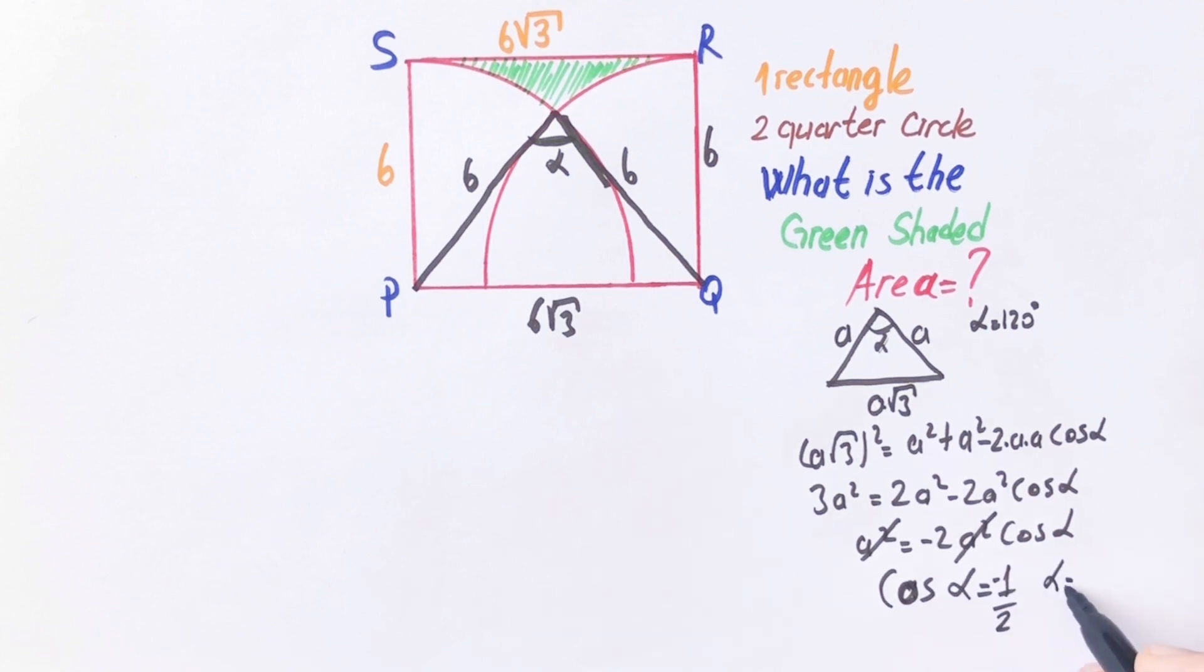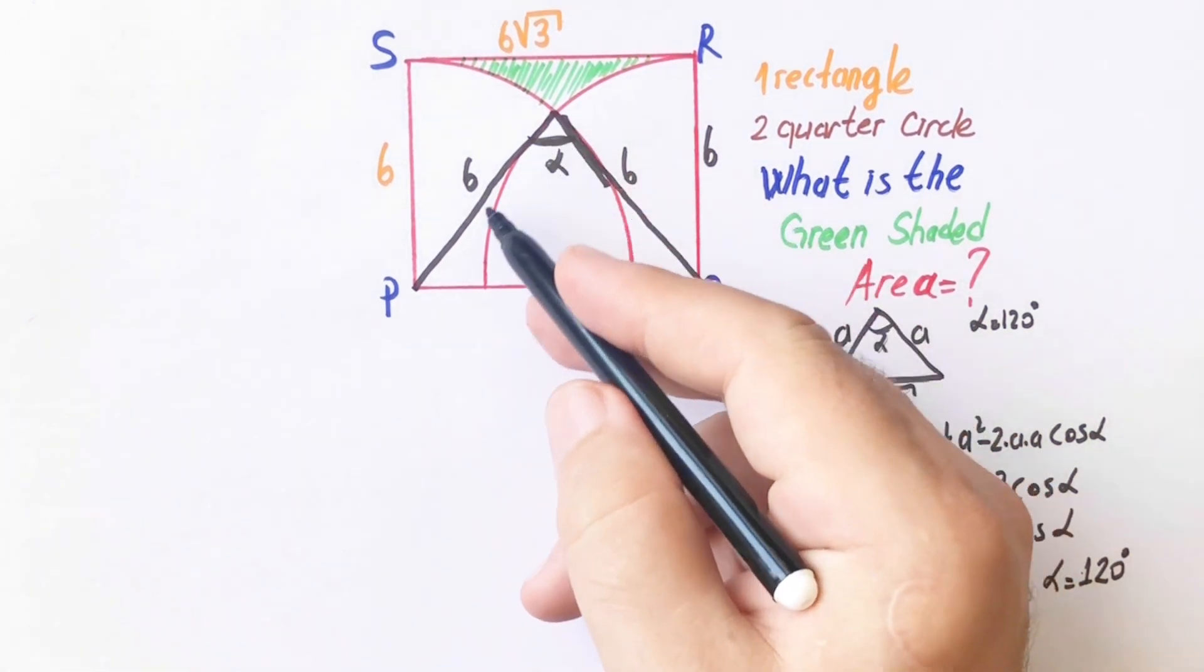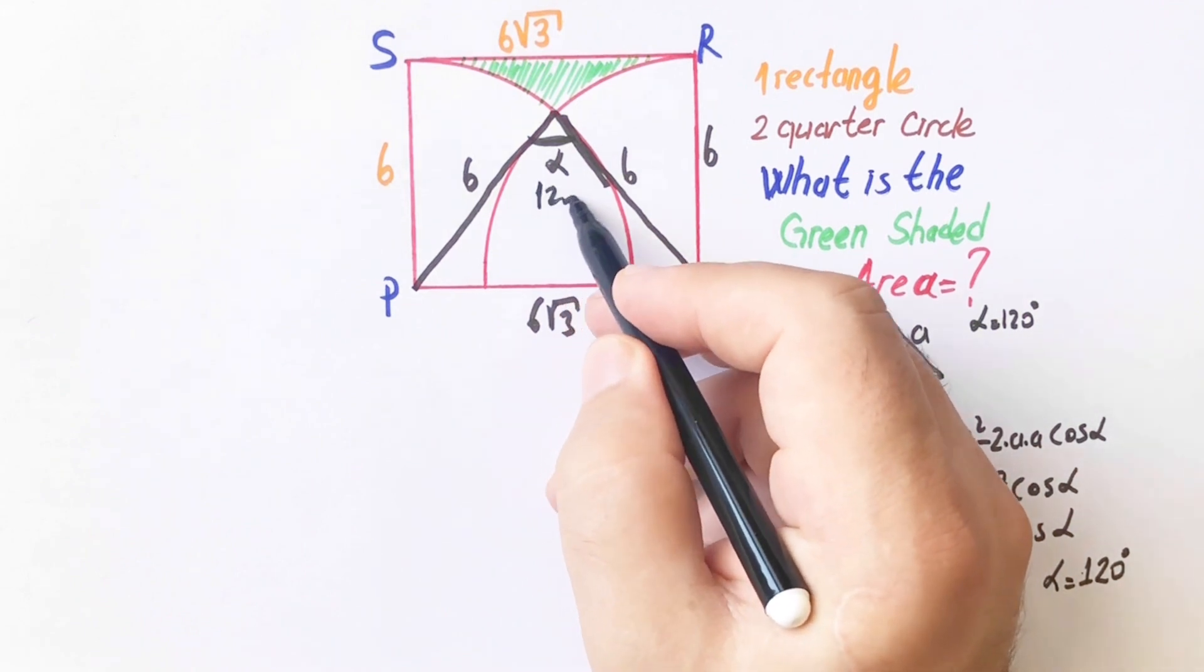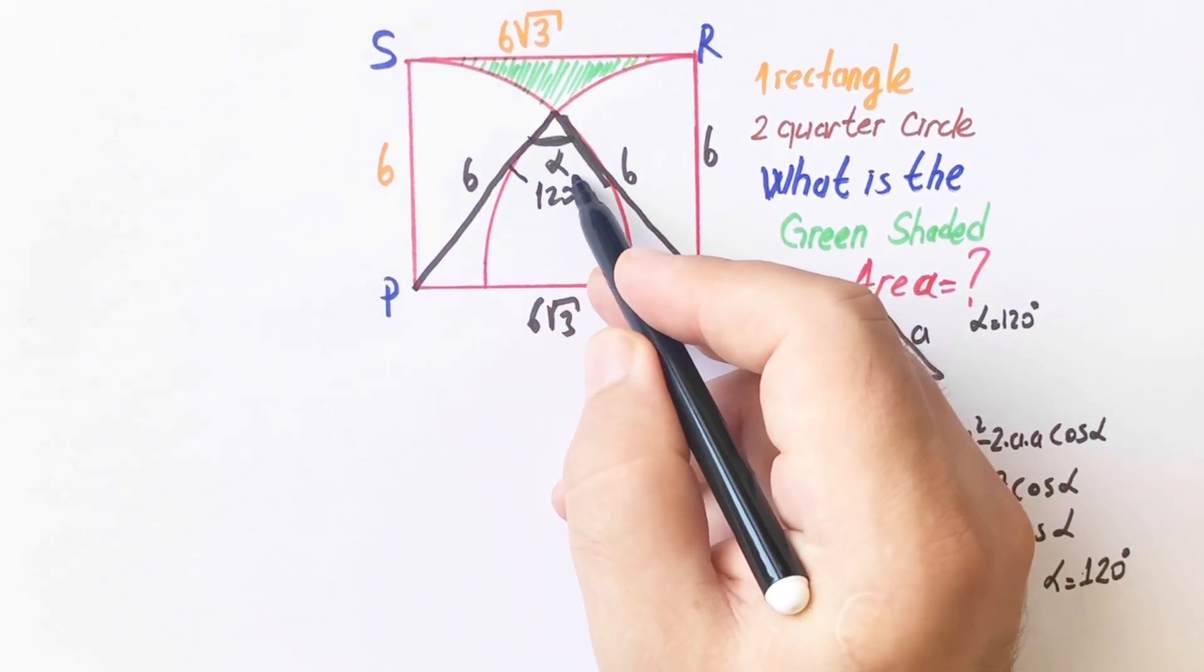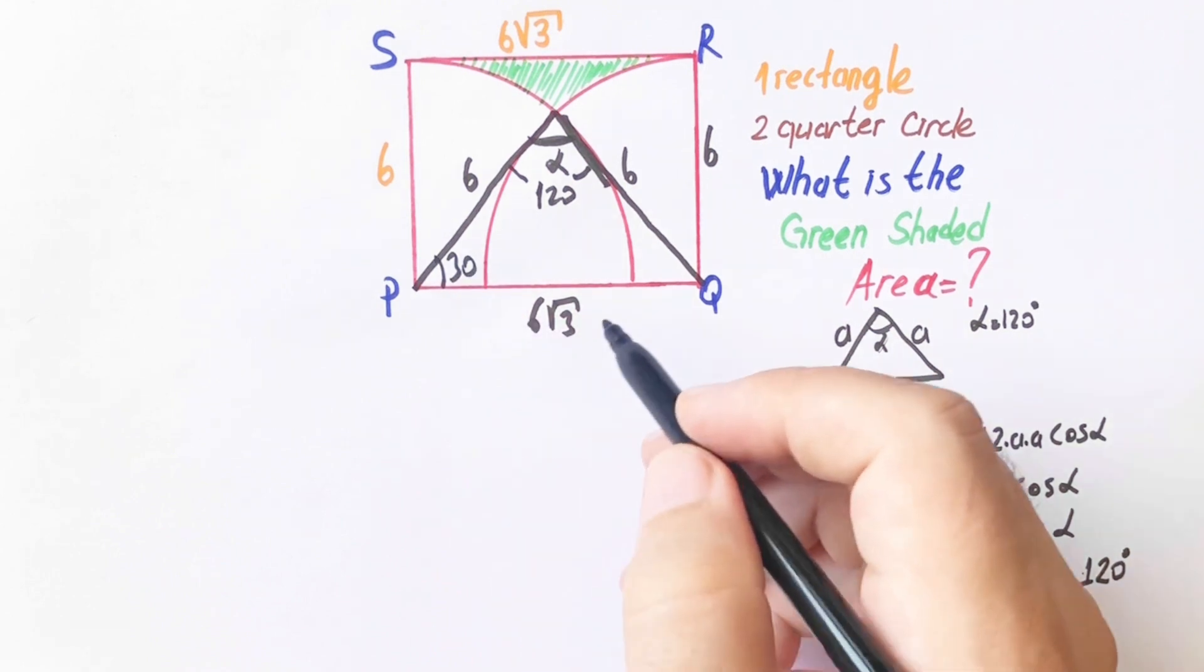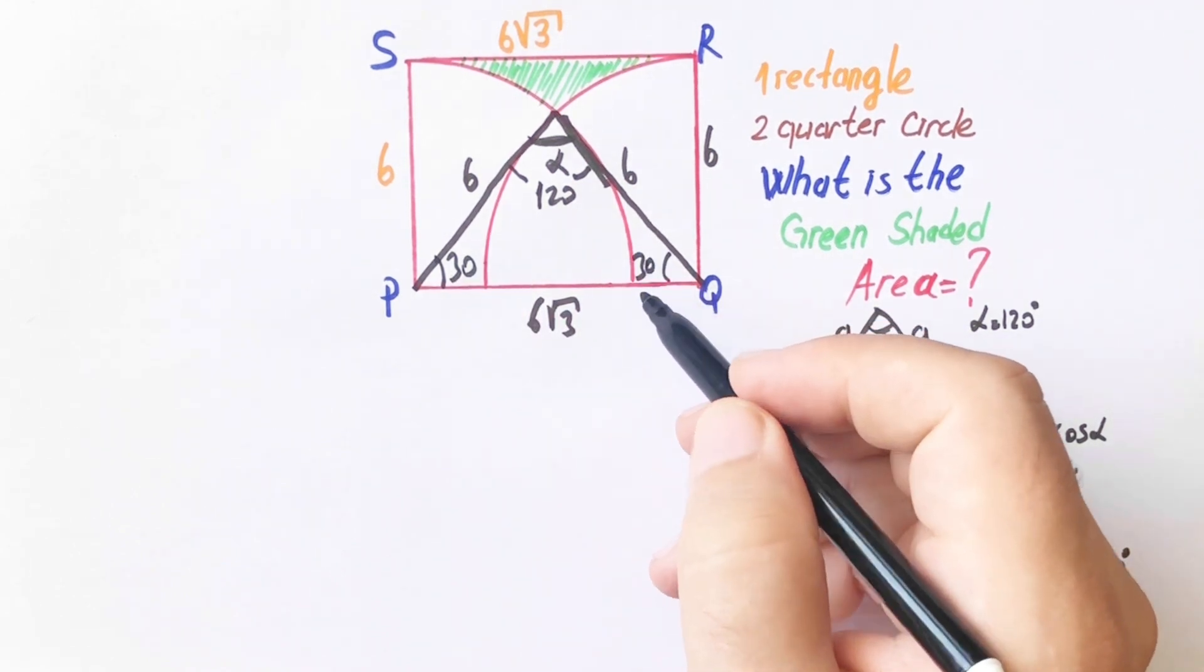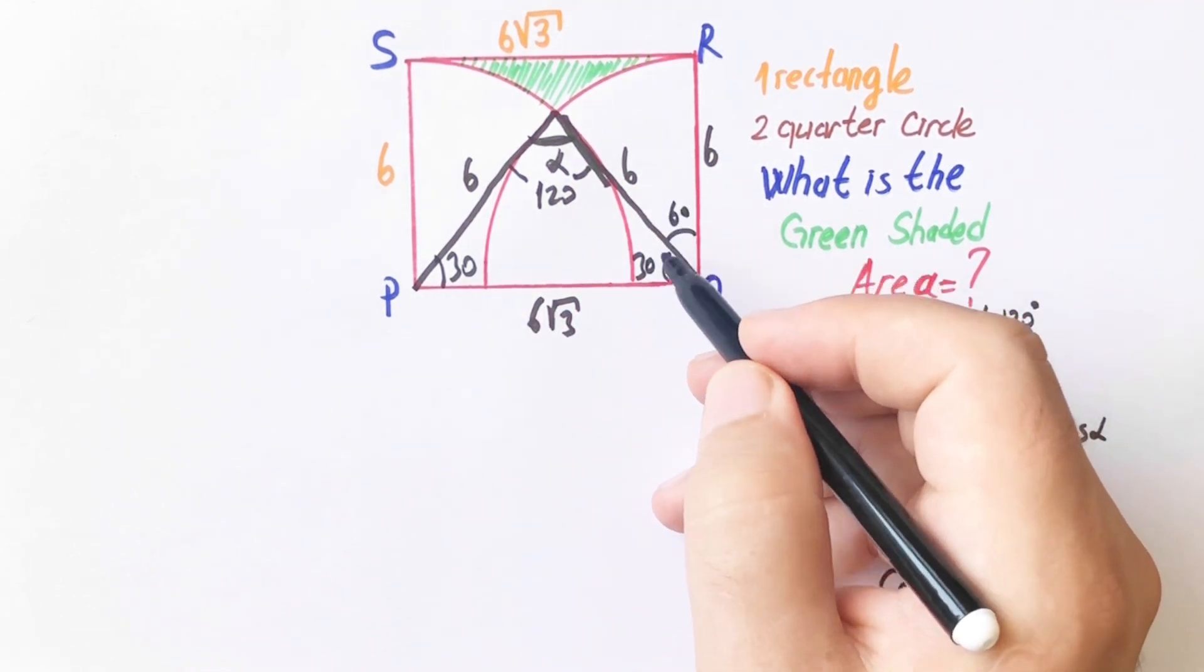Therefore, alpha is going to be 120 degrees. So the base angles are 30 degrees and 60 degrees left here.